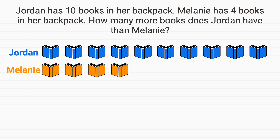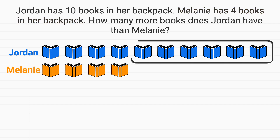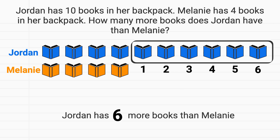Now to find how many more books Jordan has, we'll count this quantity here. We can see that it's 1 more book, 2 more books, 3 more books, 4 more books, 5 more books, 6 more books. Jordan has 6 more books than Melanie.